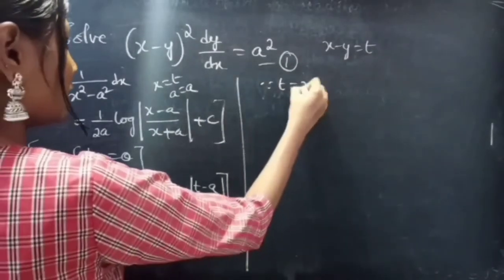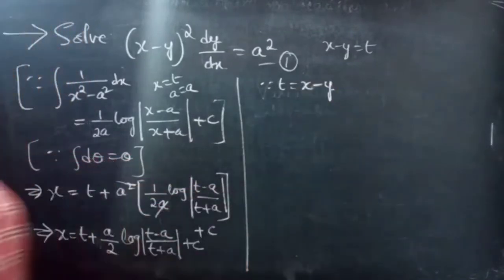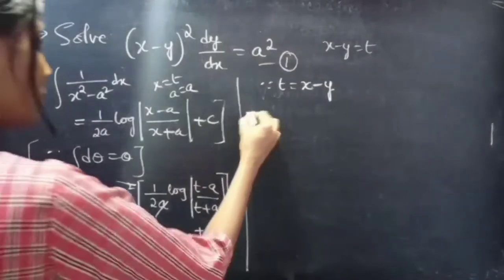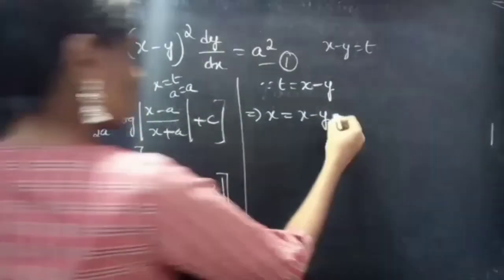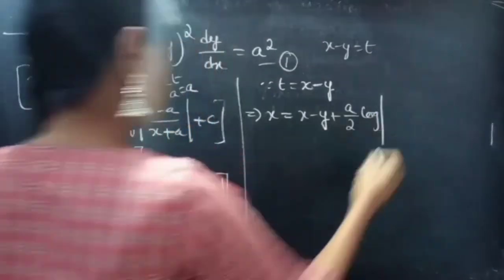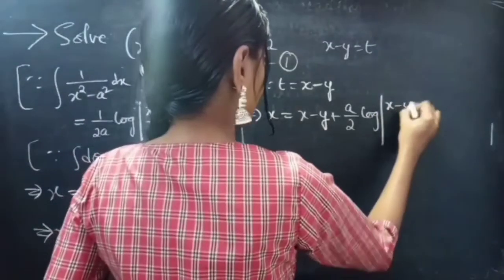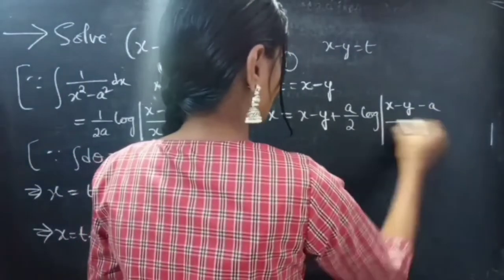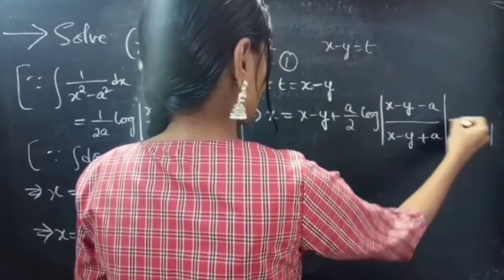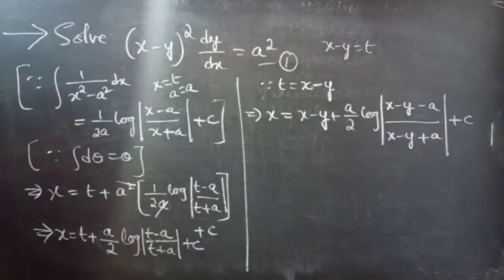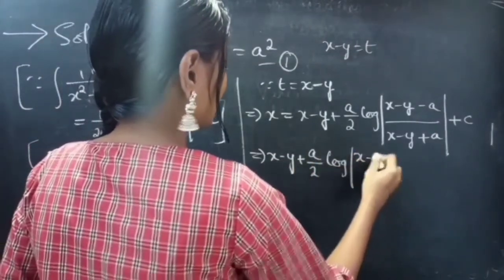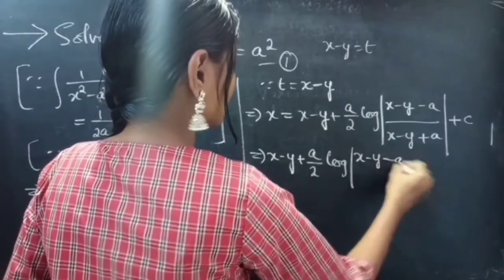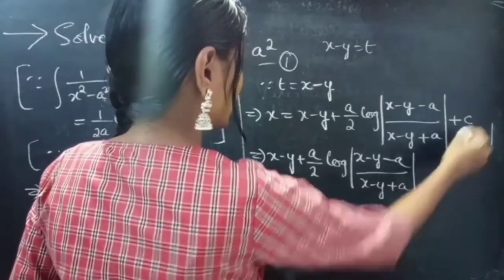Since t equals x minus y, we replace t by x minus y. This becomes: x equals (x minus y) plus a by 2 into log mod (x minus y minus a) by (x minus y plus a) plus c.